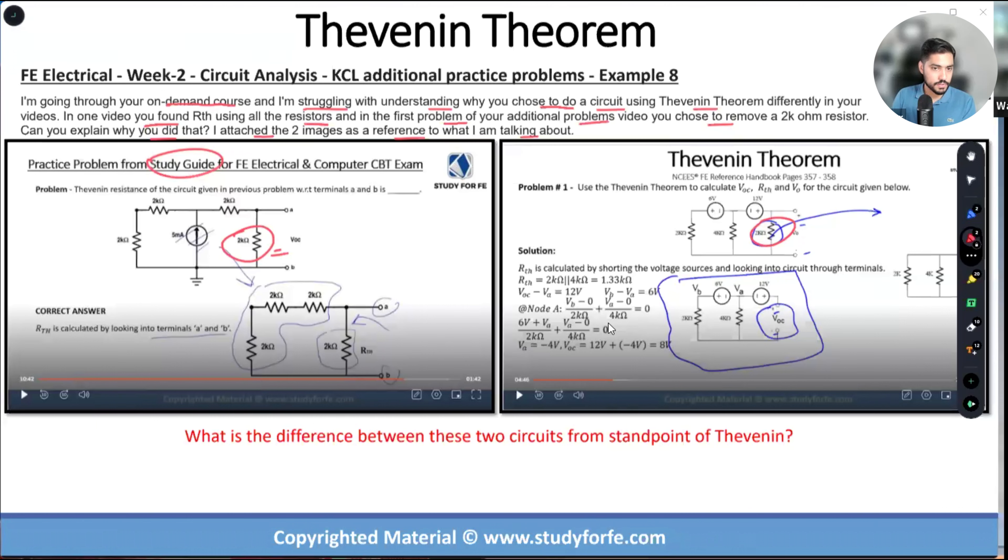So what is the difference? The question statement gives you a little bit of a hint, and really what sets these problems apart is the labeling, the way that the resistors are identified. So in this case, Thevenin resistance of circuit given in previous problem with respect to terminals a and b. With respect to a and b, did I identify the 2k resistor as a load resistor? Did I identify the voltage across this as v output or v naught? No I did not.